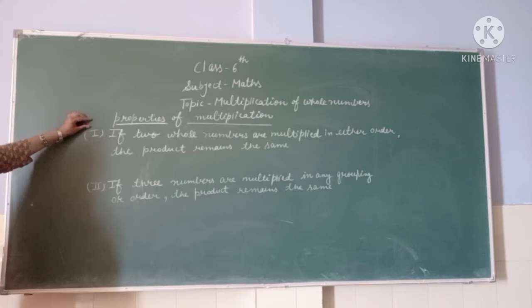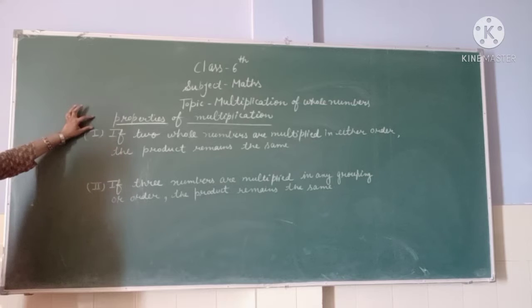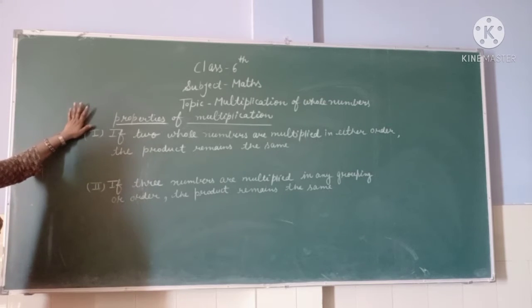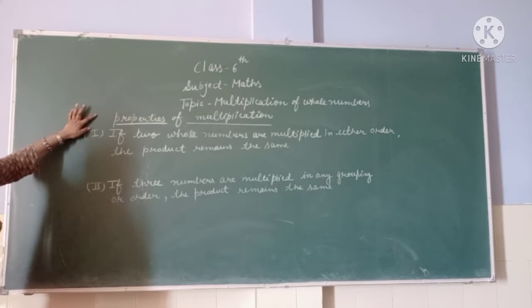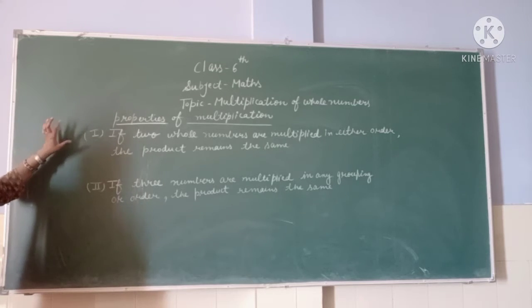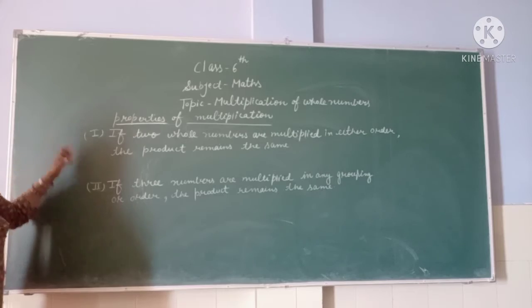Just like we have done properties of addition of whole numbers and properties of subtraction of whole numbers, similarly, we have properties of multiplication of whole numbers. Our first property is: